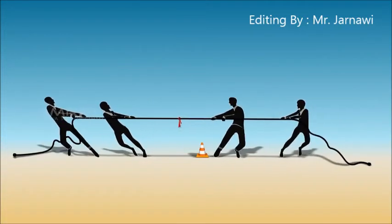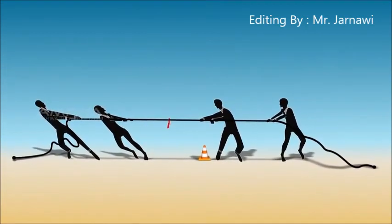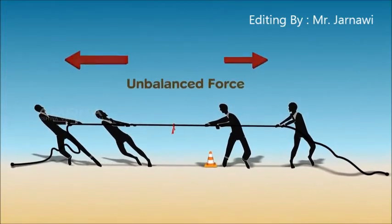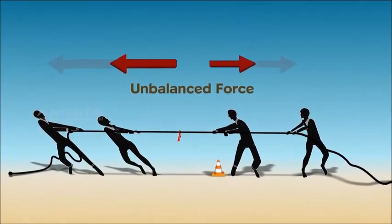If one of the teams applies greater force, it pulls the other team and the rope towards their side. In this case, the forces are unbalanced as the two forces are of unequal magnitudes in the opposite directions.